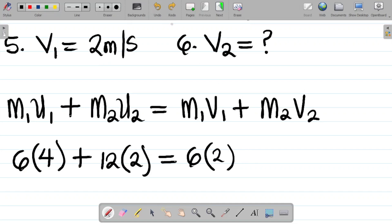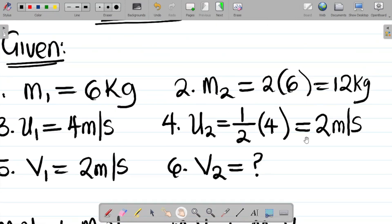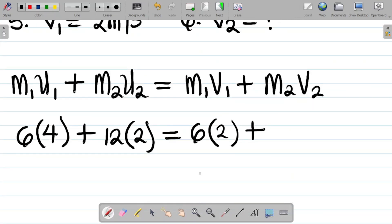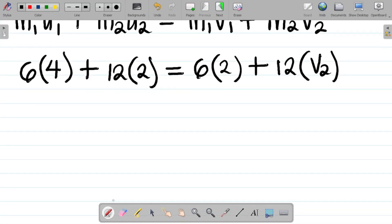Plus m2, m2 is 12 kg, that becomes 12 into v2. So v2 is unknown. Let's punch this. So we have 6 times 4 gives us 24, plus 12 times 2 gives you 24. Equals 6 times 2 is 12 plus 12 times v2 is 12v2.